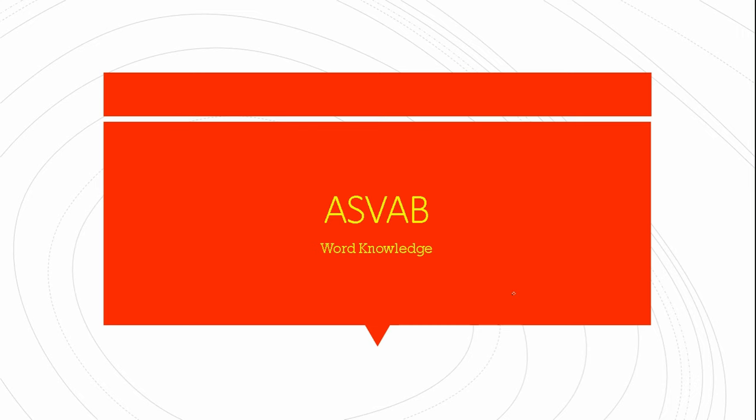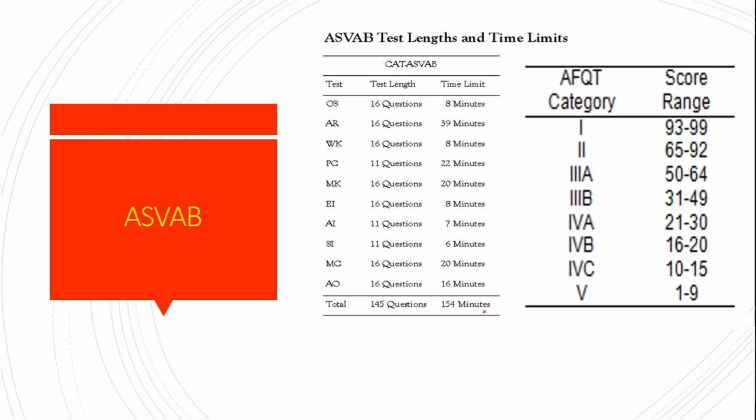Of the Armed Services Vocational Aptitude Battery — that is, the ASVAB. The ASVAB is a computer adaptive test, meaning it adjusts its questions according to each individual test taker's ability level. The first question is moderate in difficulty; if you get it right, you get a harder question, and if you get it wrong, you get an easier one — and so on throughout the rest of the test.